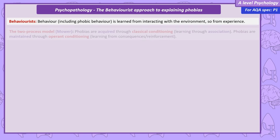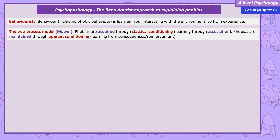A really important term in this video is the two-process model. This idea comes from Mowrer, and it suggests that phobias are initially acquired — first learnt — through classical conditioning, which is learning through association. Phobias are maintained, so kept going, through reinforcement — that is, through operant conditioning, learning through consequence. Let's consider each of these processes in turn.